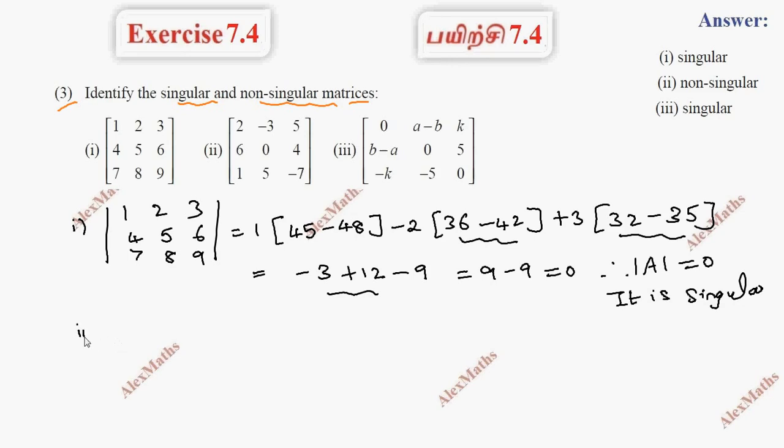Second subdivision. Second subdivision expansion. So, 2 minus 3, 5, 6, 0, 4, 1, 5, minus 7.